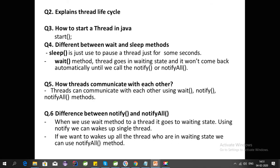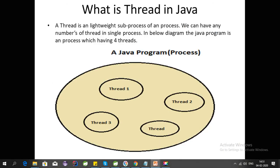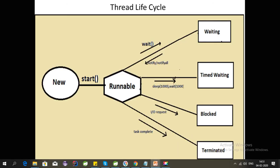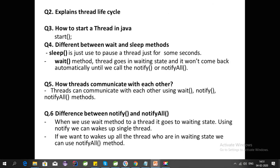The second question is: explain the thread lifecycle. The thread lifecycle has these states: New, Runnable, Waiting, Timed Waiting, Blocked, and Terminated. To start a thread we use the start method.